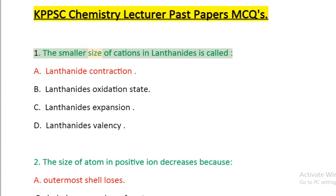Question 1: The smaller size of cations and lanthanides is called: A. Lanthanide Contraction, B. Lanthanide Oxidation State, C. Lanthanide Expansion, D. Lanthanide Valency.